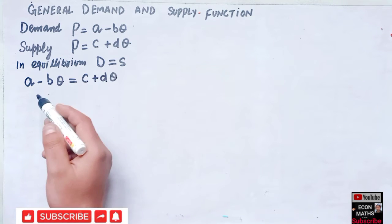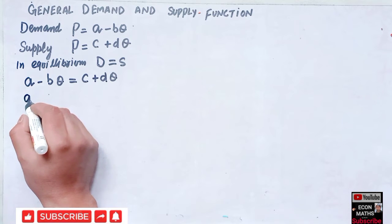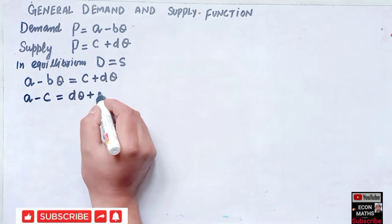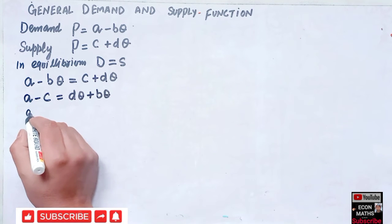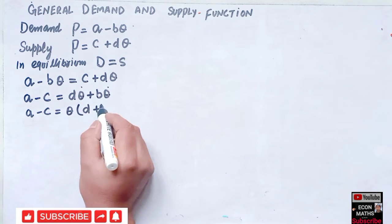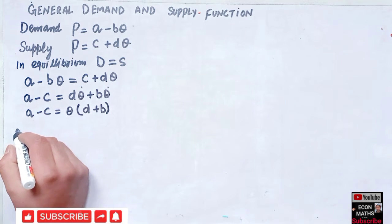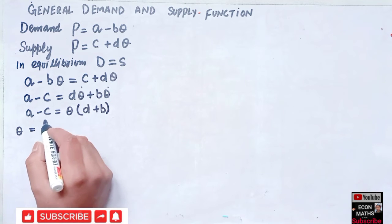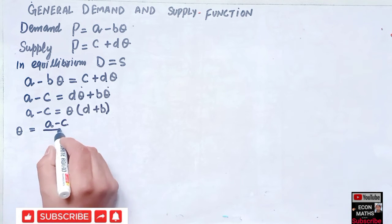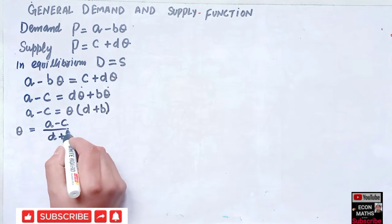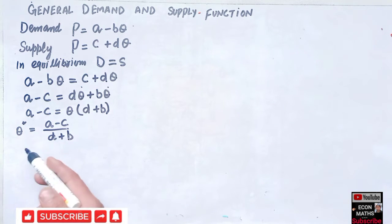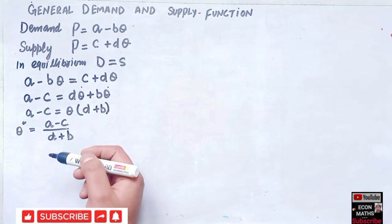We transpose C to the left-hand side: a - C = DQ + BQ. Factoring out Q gives us a - C = Q(D + B). Rearranging, the equilibrium quantity is Q = (a - C) / (D + B). This is the formula to find the equilibrium quantity.